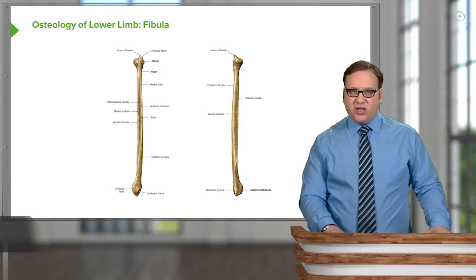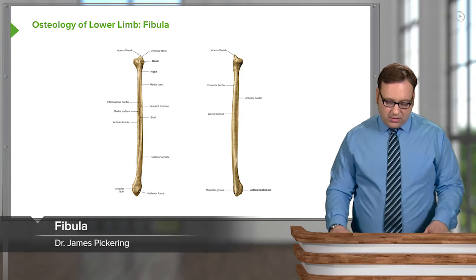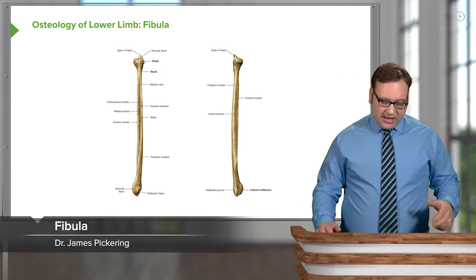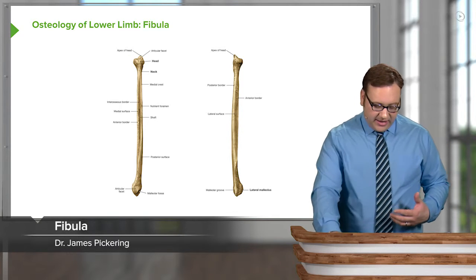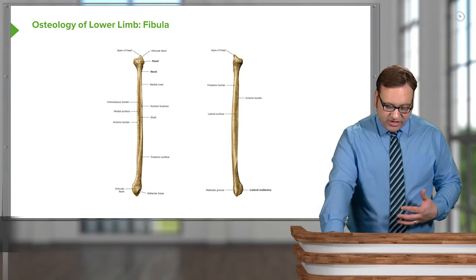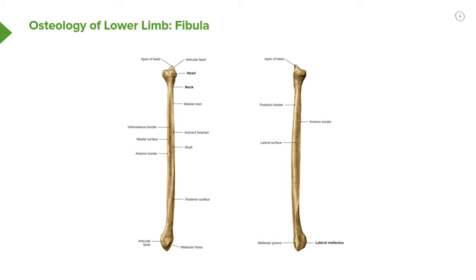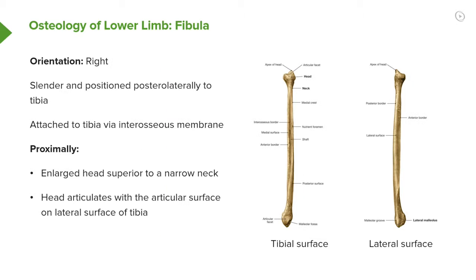Now let's turn to the fibula. The fibula has a head, a neck, and then a thin shaft which dilates inferiorly or distally to form the lateral malleolus. It's slender, positioned posterolaterally to the tibia, and attached to the tibia via the interosseous membrane.